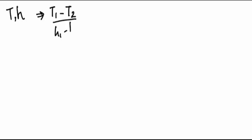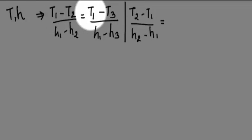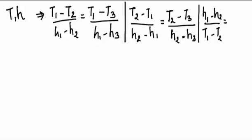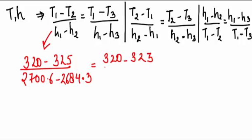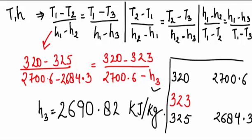The formula is T1 minus T2 upon h1 minus h2 equal to T1 minus T3 upon h1 minus h3. Or you can also write T2 minus T1 upon h2 minus h1. Now when you write T1 here, it's also T1 here. If you write T2 here, you have to start this with T2 and it becomes T2 minus T3 upon h2 minus h3. Or you can write its reciprocal: h1 minus h2 upon T1 minus T2 is equal to h1 minus h3 upon T1 minus T3. Putting values in this equation and solving for h3, we get the value of h3 which is 2690.82, which lies between the values of specific enthalpy of 320 degrees Celsius and 325 degrees Celsius.